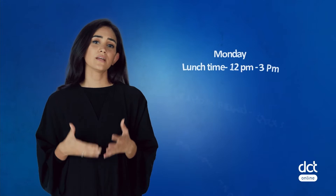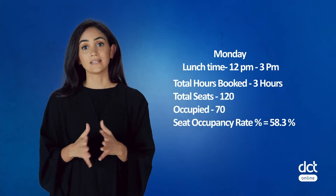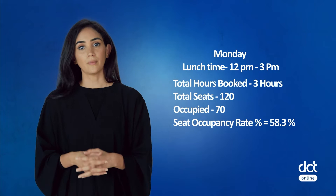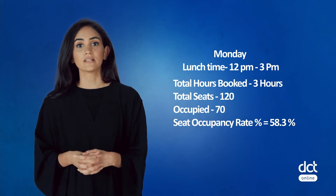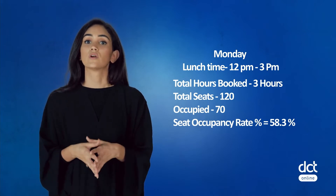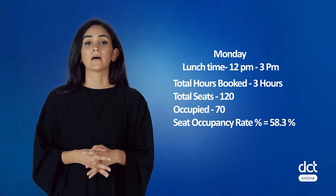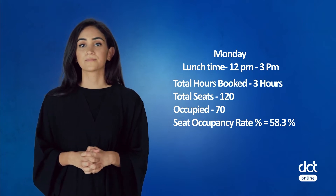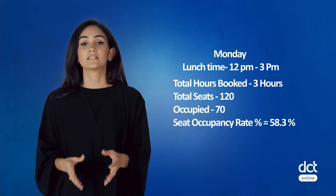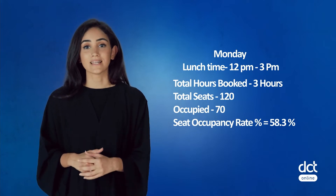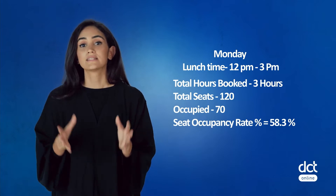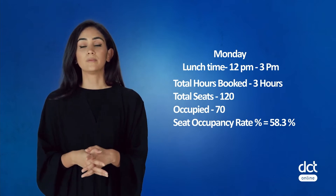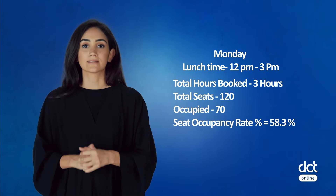Assume that a restaurant has a total of 120 seats and that 70 of them are occupied for lunch service on a Monday that runs from 12 p.m. to 3 p.m. for three hours. In this case, assuming one sitting, the seat occupancy rate percentage for this period would be 58.3%.